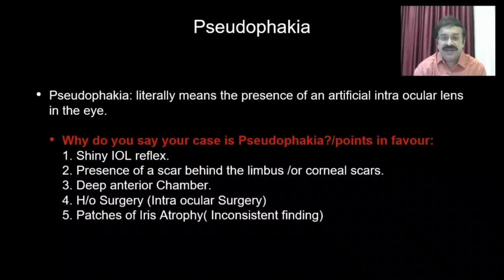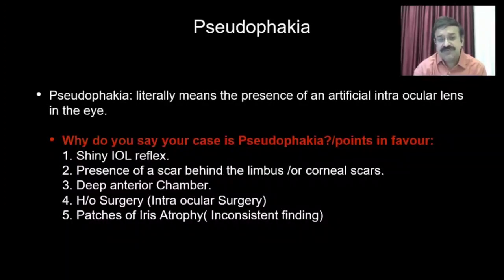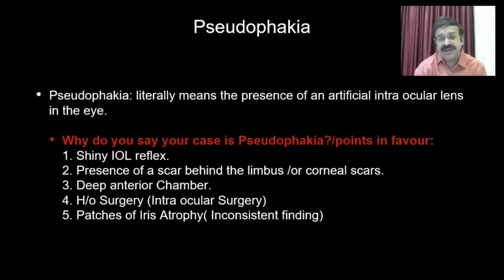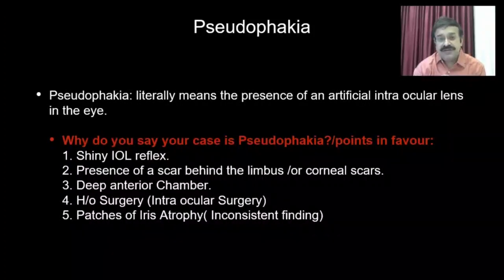The best way to find the deep anterior chamber is to compare the pseudophakic eye to the phakic eye. If both eyes are pseudophakic it is difficult to assess depth. This leads to several questions you might face: what is the depth of the anterior chamber in a normal eye at the center? What is the range? What are the causes of a deep anterior chamber, causes of a shallow anterior chamber, and the optical or ocular effects of a deep or shallow anterior chamber? Be ready with your answers.